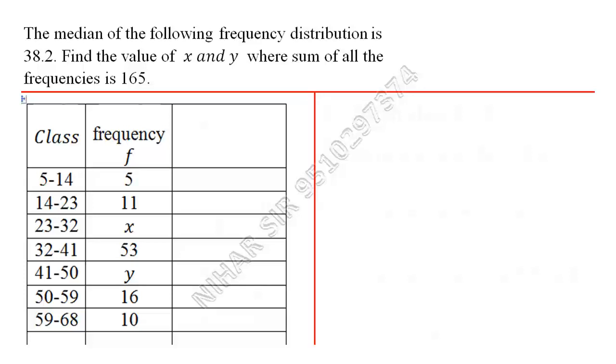Hello, in this lecture we will understand how to find two missing frequencies when median is given. So here the median of this frequency distribution is 38.2 and the sum of all the frequencies is 165. Find the value of x and y.